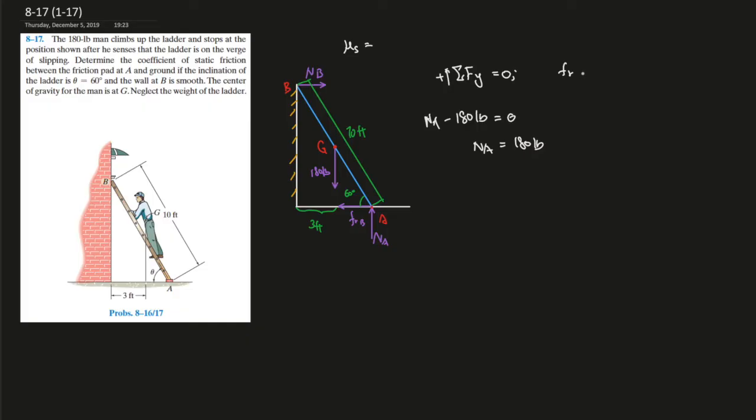And let's just say friction at A is equal to 180 pounds times mu. Well, 180 we proved here is the normal force. Friction equals the normal force times mu, which is the coefficient of static friction.